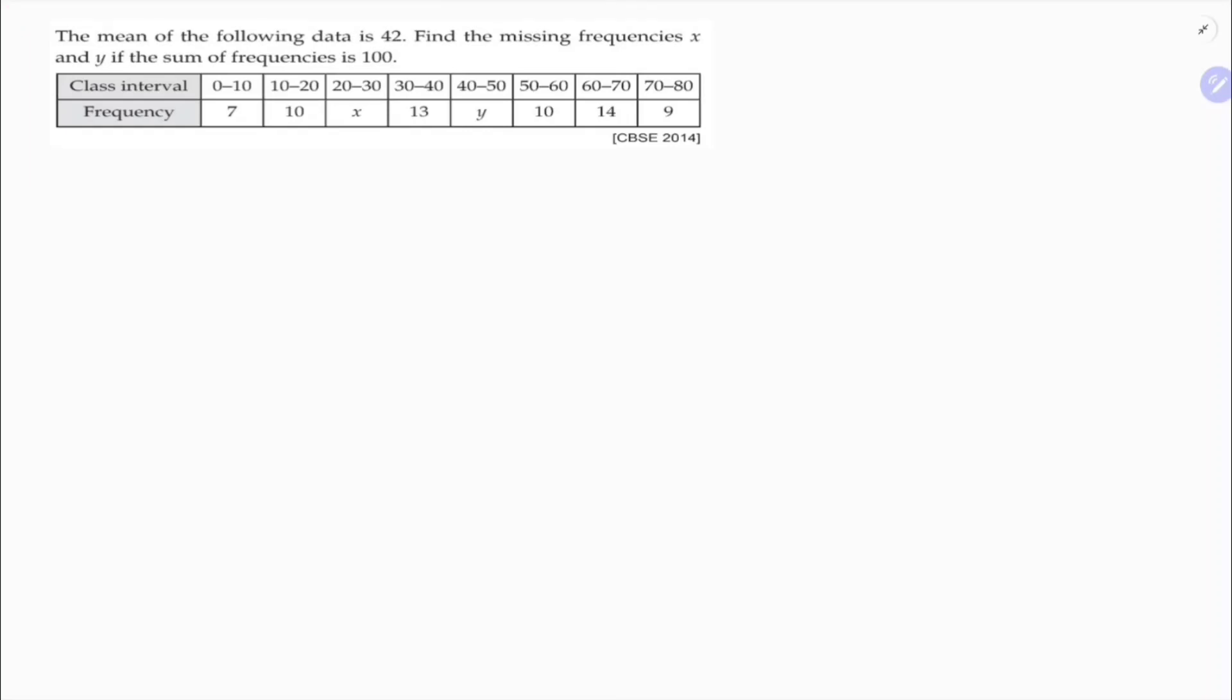The mean of the following data is 42. Find the missing frequencies x and y if sum of the frequency is 100.